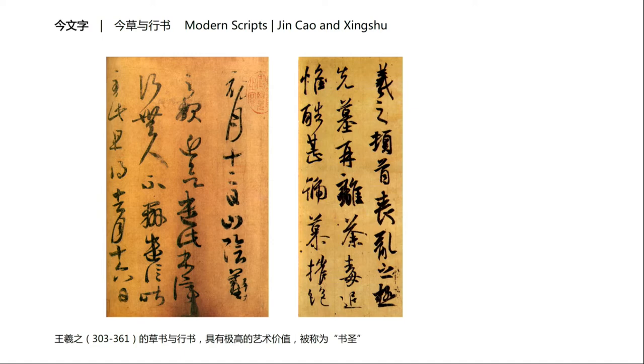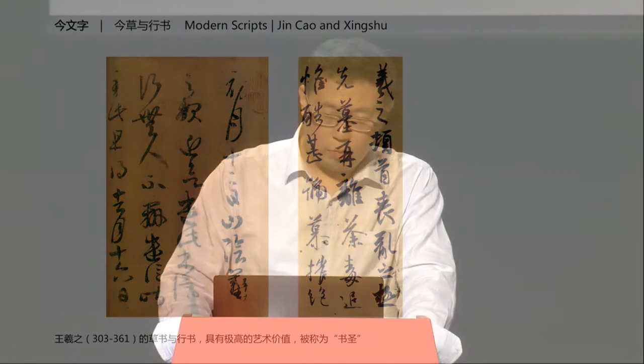This is the work of Wang Xizhi. His Cao Shu and Xing Shu have the greatest artistic value. Wang is known as the sage and king of calligraphy in China. These are works of South China from the 4th and 5th century. At the same time, in the north of China, there were a lot of Kai Shu styles.